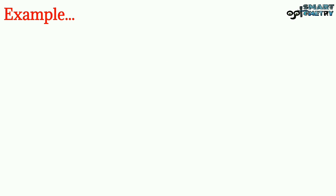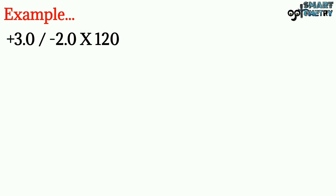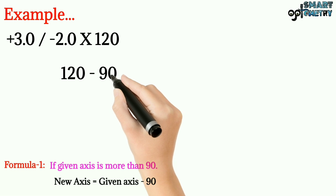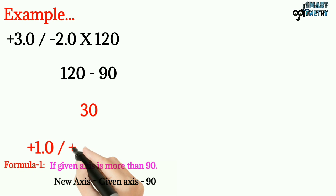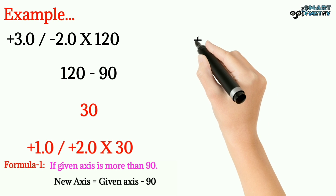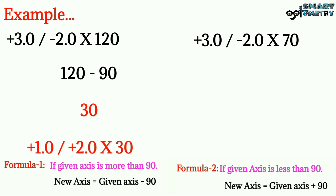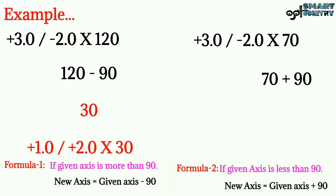For the same example we already solved, if the axis was 120: according to formula one, since the axis is more than 90, we subtract 90 from the given axis, so the new axis is 120 minus 90, giving a final axis of 30 degrees. The final power after transposition would be plus one with plus two cylinder at 30 degree axis. And if the axis was 70 degrees, according to formula two, since the axis is less than 90, we add 90 to the given axis, giving a final axis of 70 plus 90, which equals 160 degrees. The final power would be plus one with plus two cylinder at 160 degree axis.